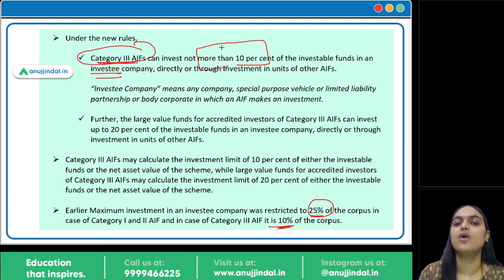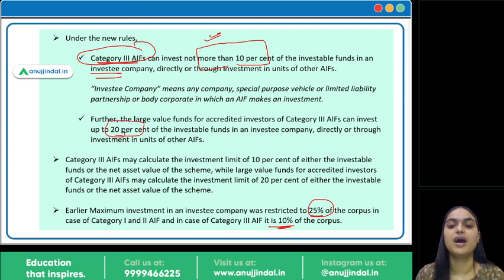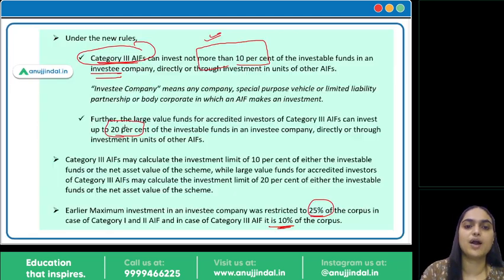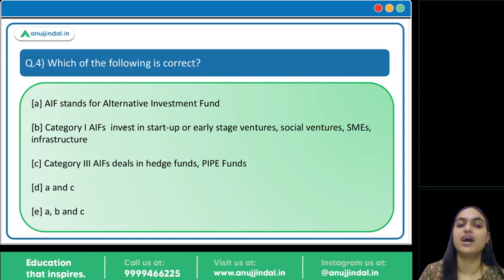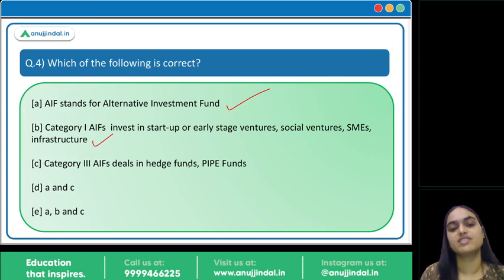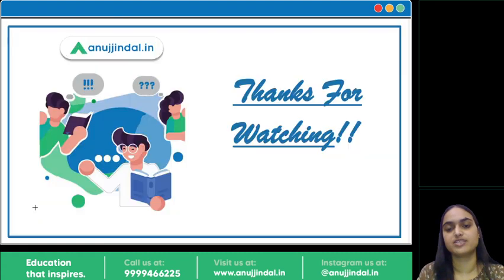As of now the limit is 10 percent, but in case of a large fund, 20 percent can be invested. This 10 or 20 percent is calculated either as a percentage of investable funds or as a percentage of net asset value. Coming back to the final question identifying the correct statement: AIF stands for Alternative Investment Fund — correct. Category one AIFs invest in startups, early stage ventures, social ventures, SMEs, and infrastructure — correct. Category three AIFs deal in hedge funds and PIPE funds — correct. All statements are correct, so the answer is option E. That's it for today's session — I hope it was useful. Thank you so much.